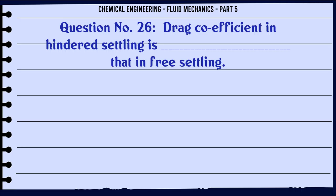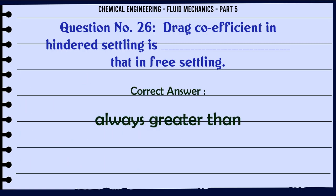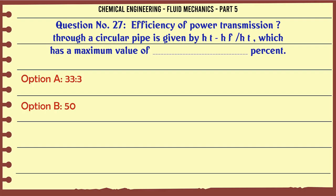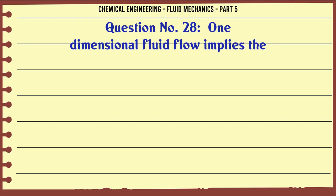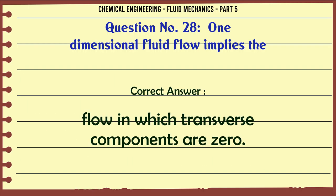Drag coefficient in hindered settling is that in free settling: a) less than, b) equal to, c) not necessarily greater than, d) always greater than. The correct answer is always greater than. Efficiency of power transmission through a circular pipe is given by HT/HF which has a maximum value of: a) 33.3%, b) 50, c) 66.6, d) 88.8. The correct answer is 66.6. One-dimensional fluid flow implies the: a) flow in straight lines only, b) uniform flow, c) steady uniform flow, d) flow in which transverse components are zero. The correct answer is flow in which transverse components are zero.